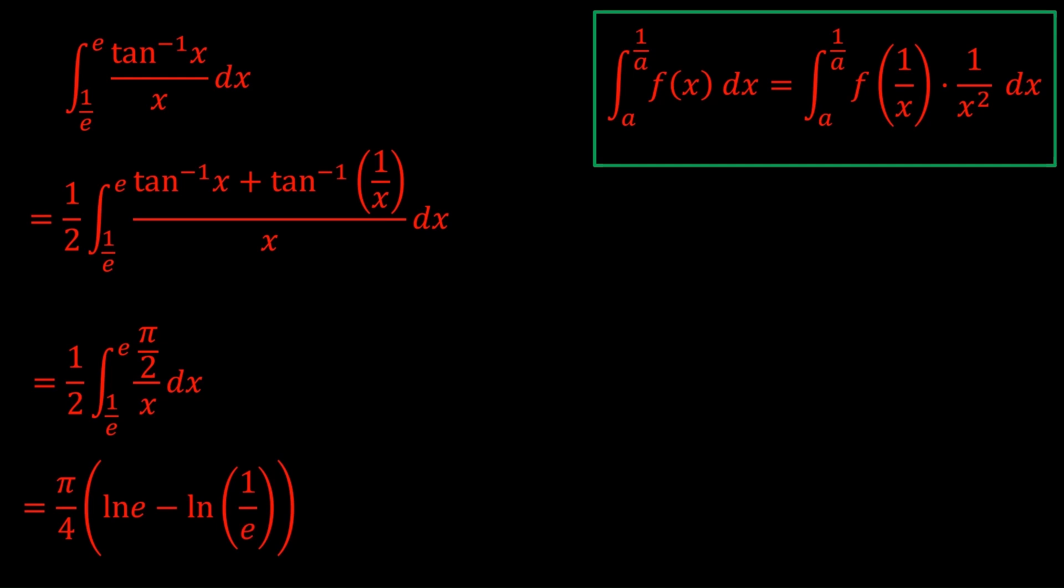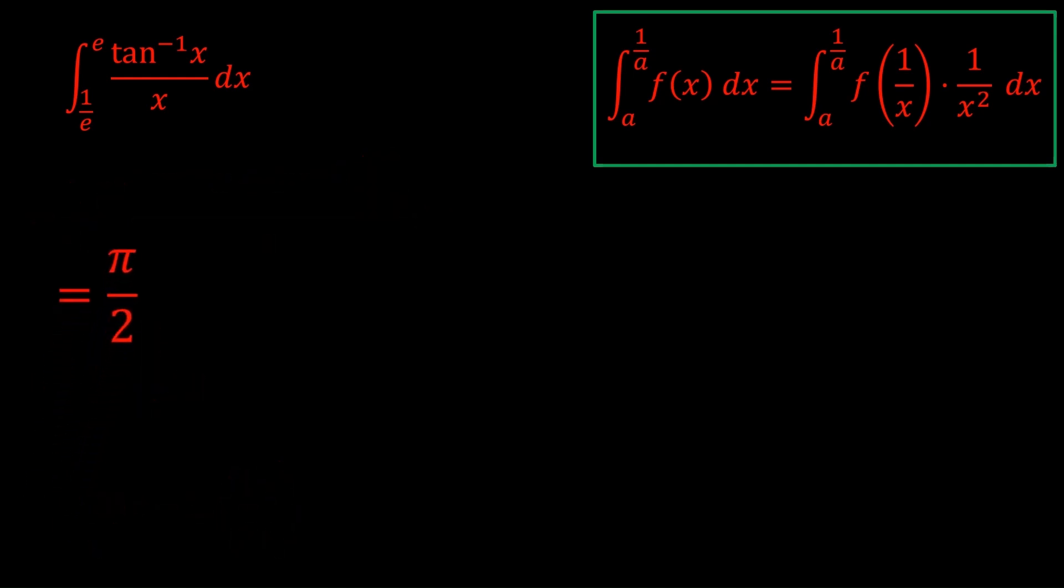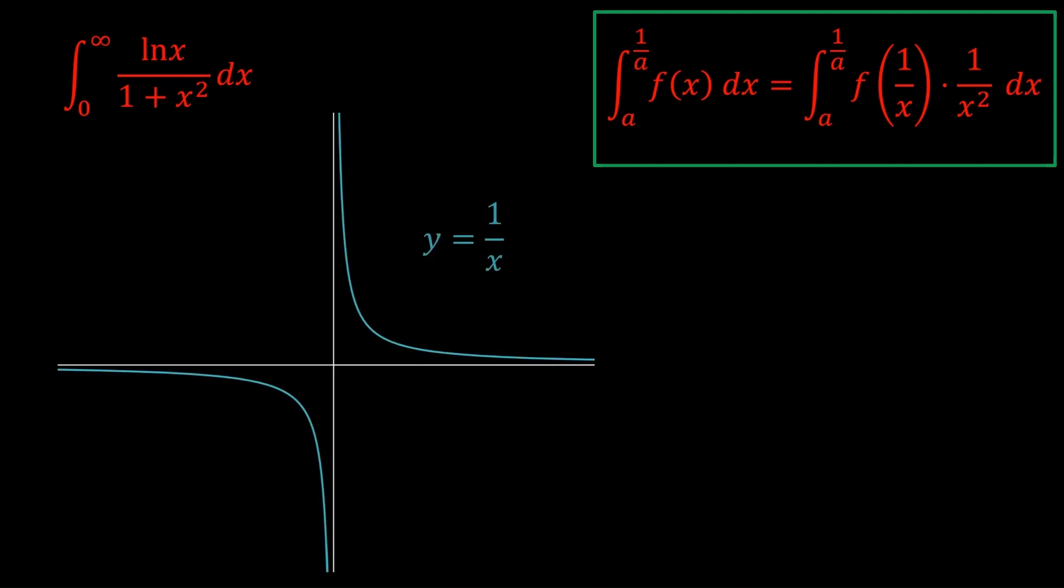Okay, so now it's simply a natural log, sub in the bounds, and we have our answer, π/2. There we go. Let's do another example. Okay, don't click off, don't be scared by the infinity. It's not that deep. I'm going to tell you why these bounds are actually of the form a to 1/a.